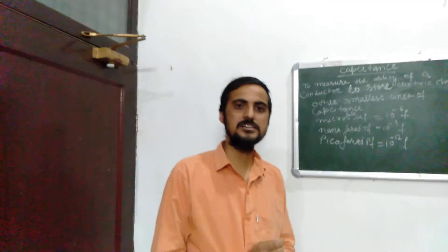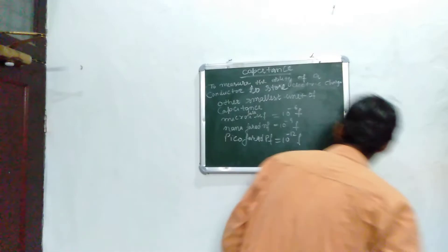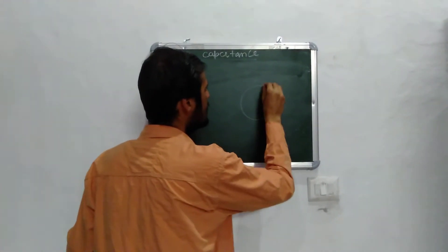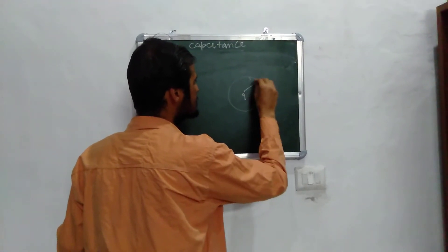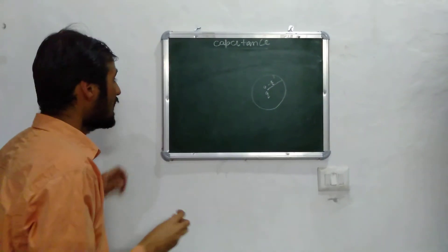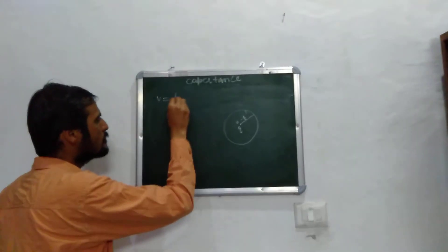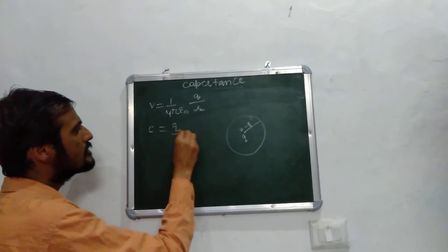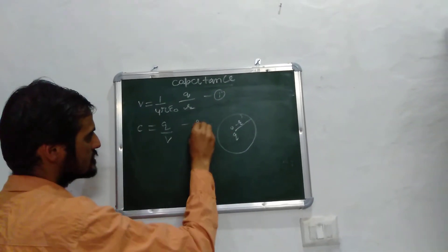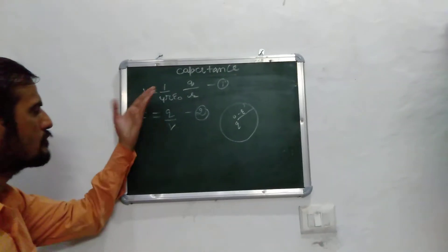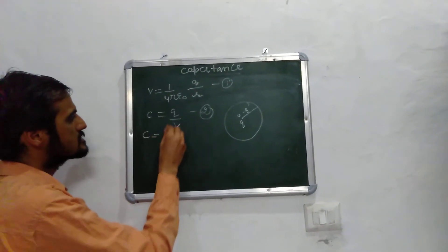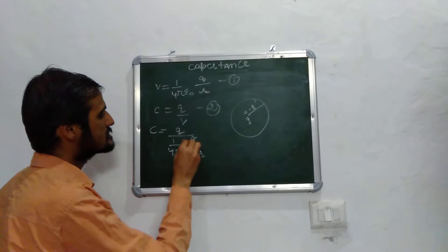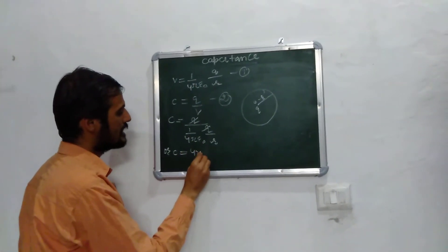Now we will discuss the capacitance of a spherical conductor. Consider a spherical conductor of radius R with charge Q. We know that V equals 1 upon 4π epsilon-naught, multiplied by Q upon R. Also, C equals Q upon V. Substituting equation 1 into equation 2, we get C equals 4π epsilon-naught R, which is the capacitance of a spherical conductor.